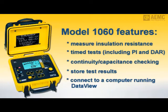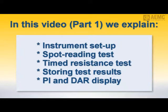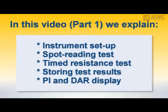For details on all its features and functionality, consult the documentation that comes with the instrument. In Part 1 of this two-part video series, we explain some of the basic functions of the Model 1060. We begin by describing how to set up the instrument for testing, then demonstrate two commonly used methods for testing insulation resistance: the manual spot reading test and the timed resistance test. Along the way, we describe how to store results in the instrument.